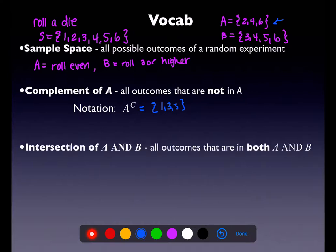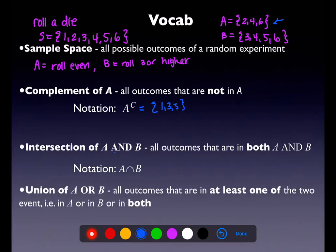Now we can start working with A and B. We can either take the 'and' or the 'or.' When we take the 'and,' we're looking for overlap. The 'and' gives all outcomes in both A and B. Comparing A and B, they have a 4 and a 6 in common. So A and B = {4, 6}. That's the 'and' — outcomes that are in both.